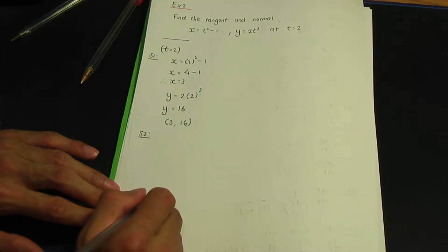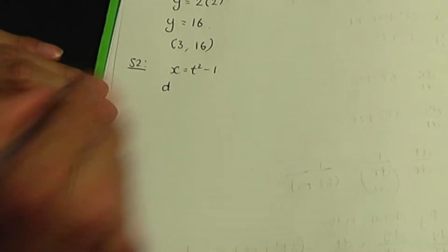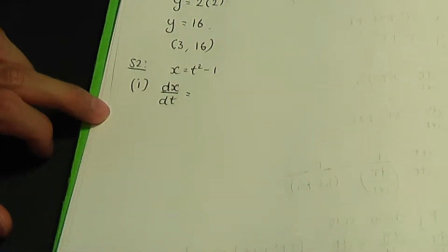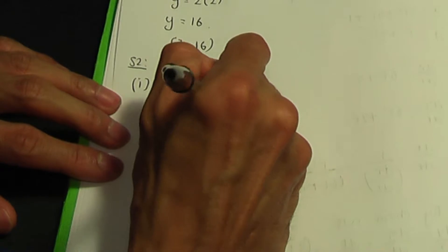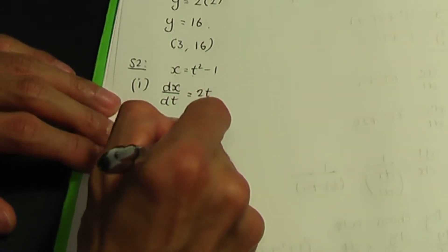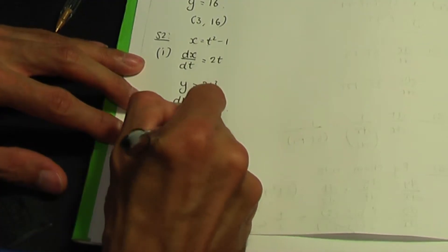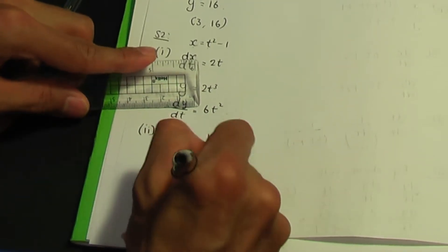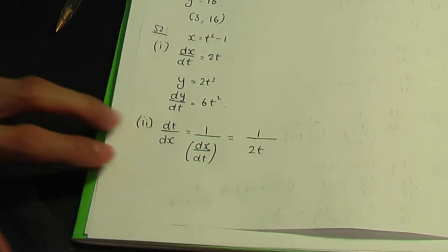Finding dy over dx: x equals t squared minus 1, so dx by dt equals 2t. y equals 2t cubed, so dy by dt equals 6t squared. Then dt over dx equals 1 over dx by dt, which gives 1 over 2t.